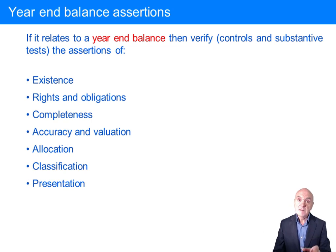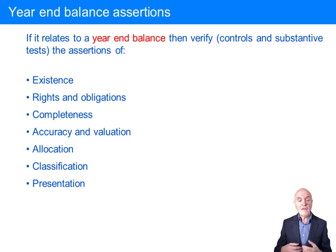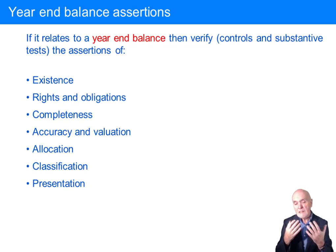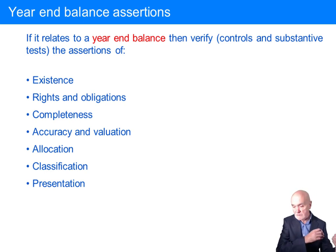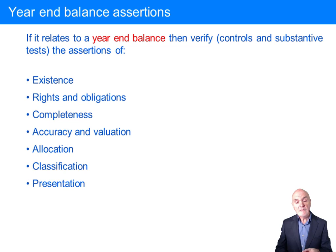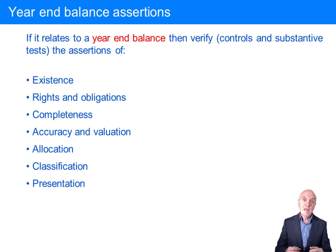If the internal control system is very good, then you will be able to rely to a large extent on it. That will reliably mean that most of the time the assertions are correct. So a good internal control system recording inventory receipt and dispatch means that if the book stock is kept very accurately, you have quite good evidence about the existence and completeness of inventory, and the amount of substantive testing you have to do to actually go and verify inventory at year-end is cut down.